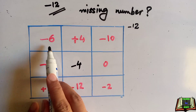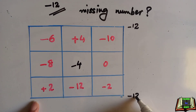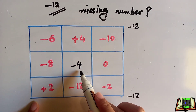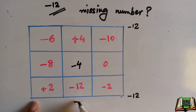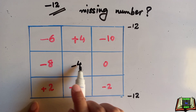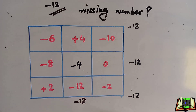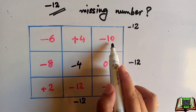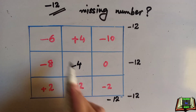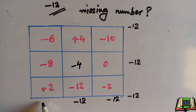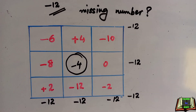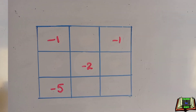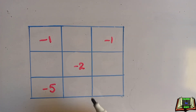This diagonal — minus 6, minus 4, minus 10, and minus 2 — adds up to minus 12. This column: plus 4 and minus 4 cancel out, leaving minus 12. This row: minus 8 and minus 4 gives minus 12. Each row, column, and diagonal adds up to the same number, so this is a magic square and minus 4 is the missing number.